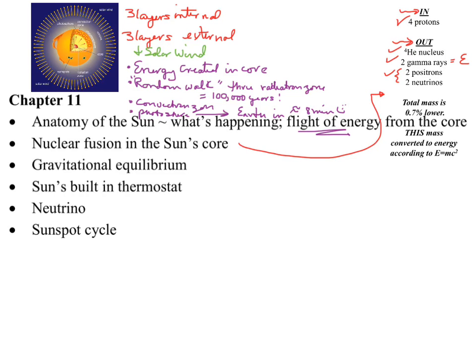Nuclear fusion in the sun's core. When it says four protons, those are basically four nuclei of hydrogen atoms. So four hydrogen nuclei are what you put in, and what you get out is a helium nucleus, gamma rays — which are basically the energy — two positrons and neutrinos. If you were to weigh the products — the helium, gamma rays, positrons, and neutrinos — they actually weigh about 0.7% less than what you put in. That's where Einstein's E = mc² comes in — the missing mass is converted to energy.